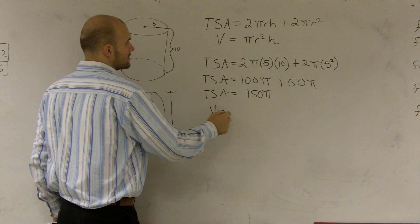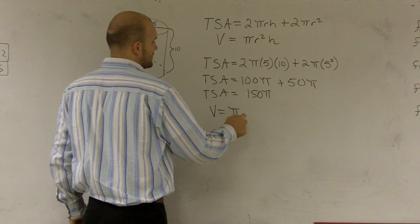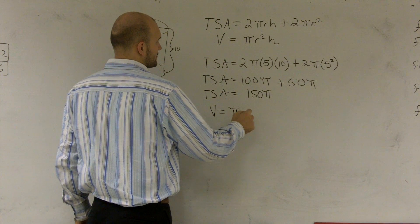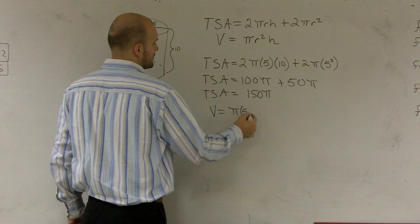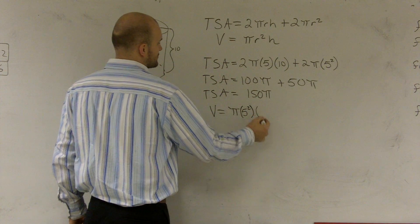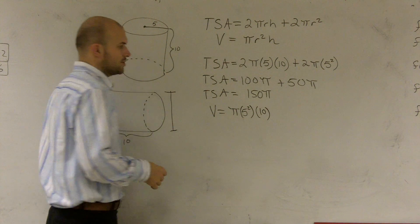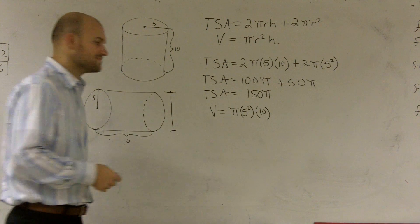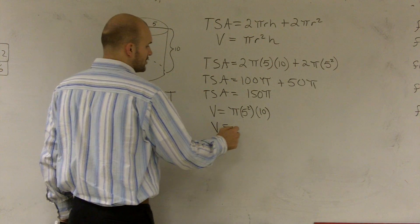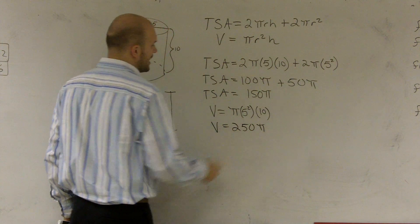So the volume of this is going to be pi r squared. So r is 5 squared times h, which would be 10. So 5 squared is 25 times 10 would be 250. Volume equals 250 pi.